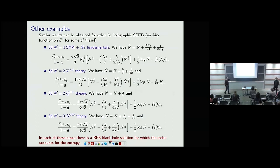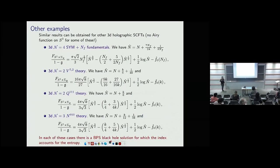Another question: do you have results for ABJ (different gauge group ranks), and could there be an interpretation in terms of a black hole in higher-spin gravity? The speaker says they have some numerics but haven't yet extracted the analytic expressions, and agrees it's an interesting direction.